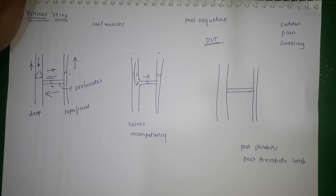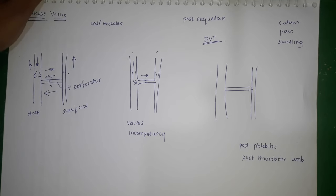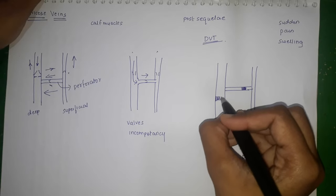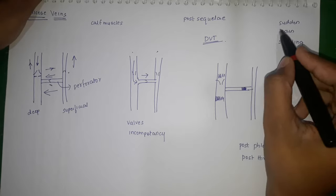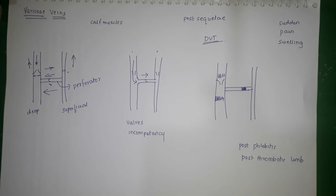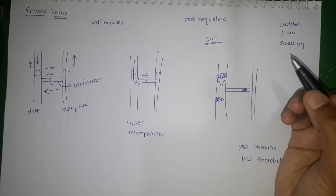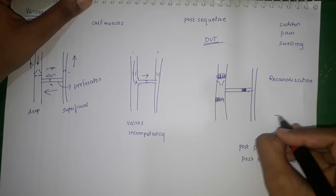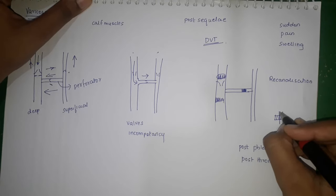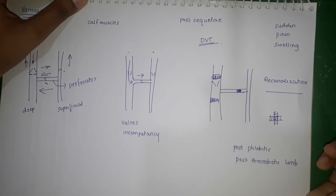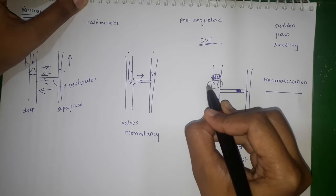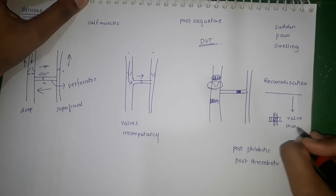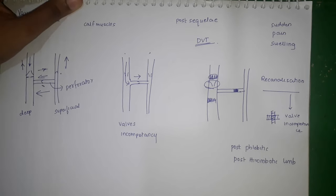Eliciting this DVT history is very important in any patient presenting with varicose veins. Once a clot forms in the deep venous system and is treated, during thrombolysis there is a process called re-canalization — a patency forms through the clot over a long duration. During re-canalization, the valves present in that segment are destroyed. Because these valves are destroyed, this leads to valve incompetence, which is one of the commonest causes of varicose vein development.